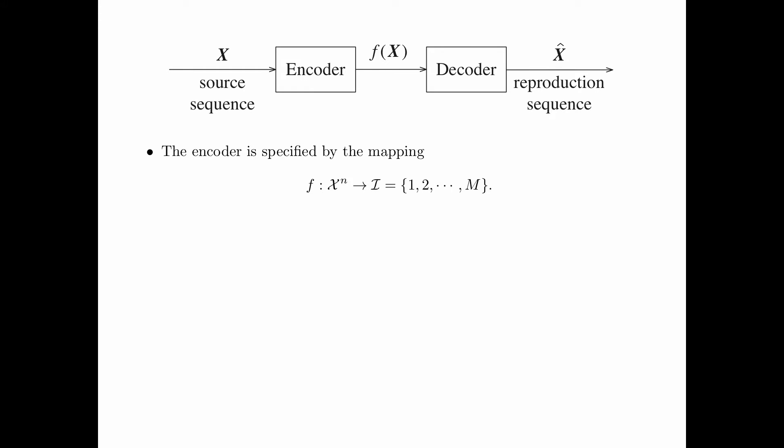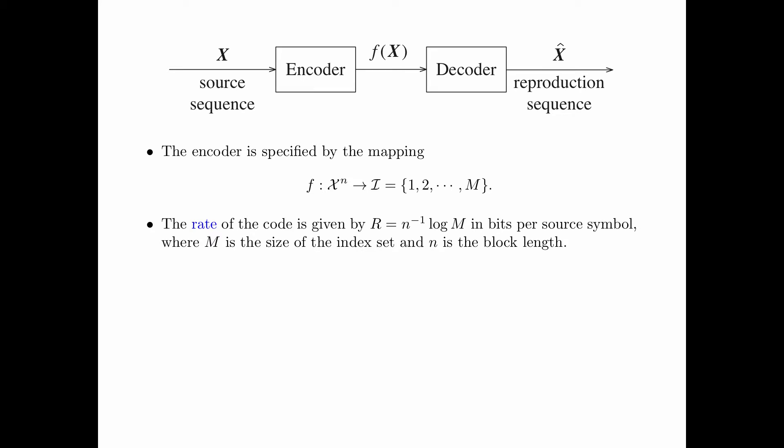The encoder is specified by the mapping f from script x to the power n to the index set script i. The rate of the code is given by R, defined as log m divided by n, in bits per source symbol, where m is the size of the index set and n is the block length. We assume that the base of the logarithm is equal to 2.